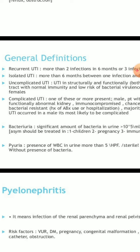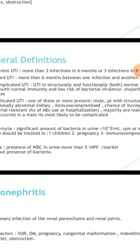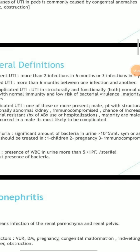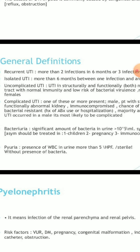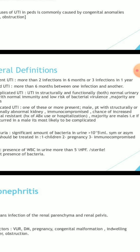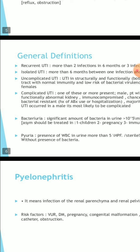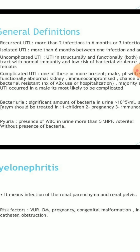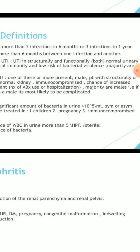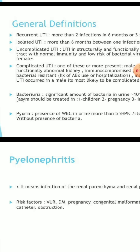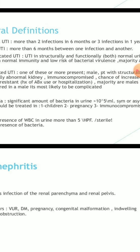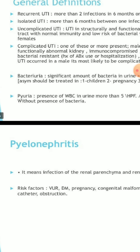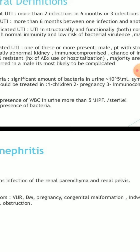Complicated UTI occurs when the patient has a structurally or functionally abnormal kidney, is immunocompromised, has increased bacterial resistance, history of antibiotic use, or hospitalization — majority are males. If UTI occurs in a male, it is most likely complicated. Bacteriuria means significant bacteria in urine (10^5 mL), and should be treated in children, pregnancy, and immunocompromised patients. Pyuria means presence of WBCs in urine — more than 5 WBCs per high-power field without bacteria.